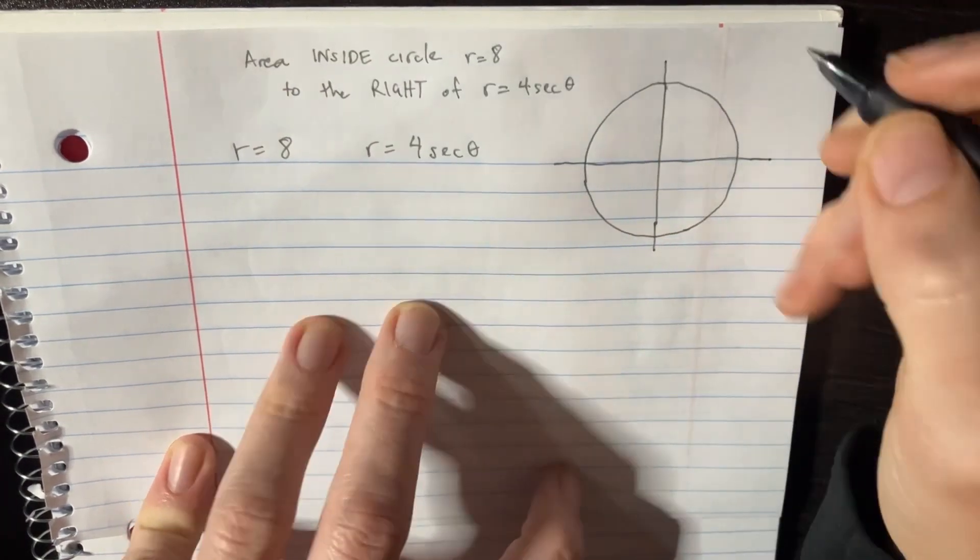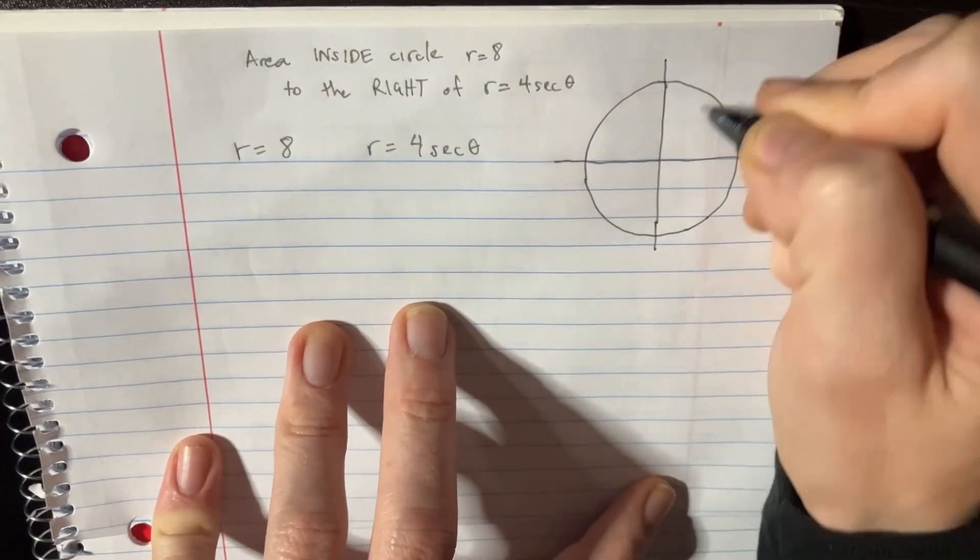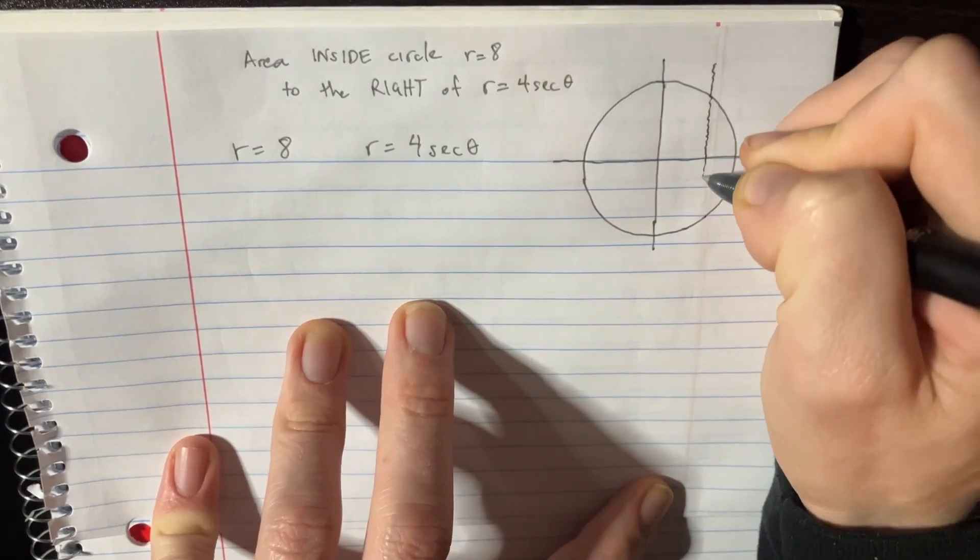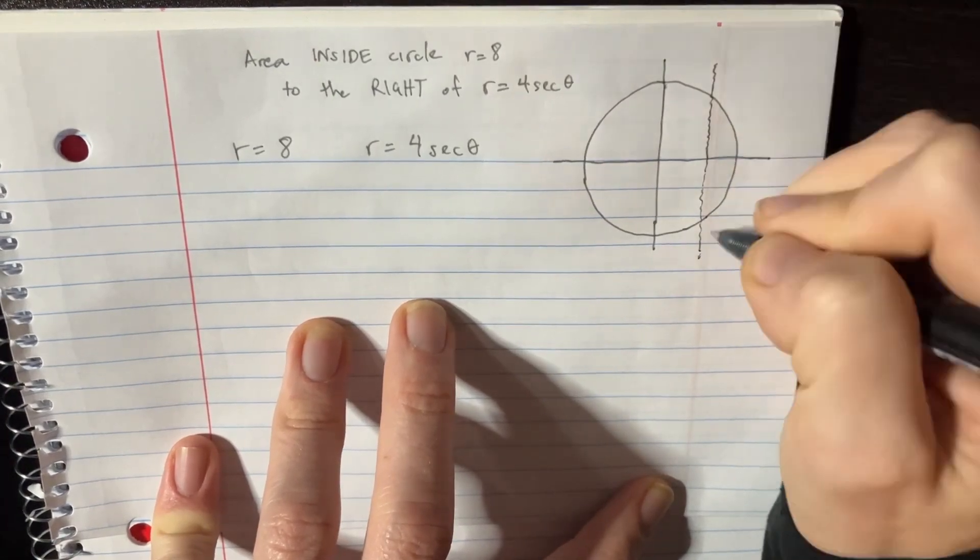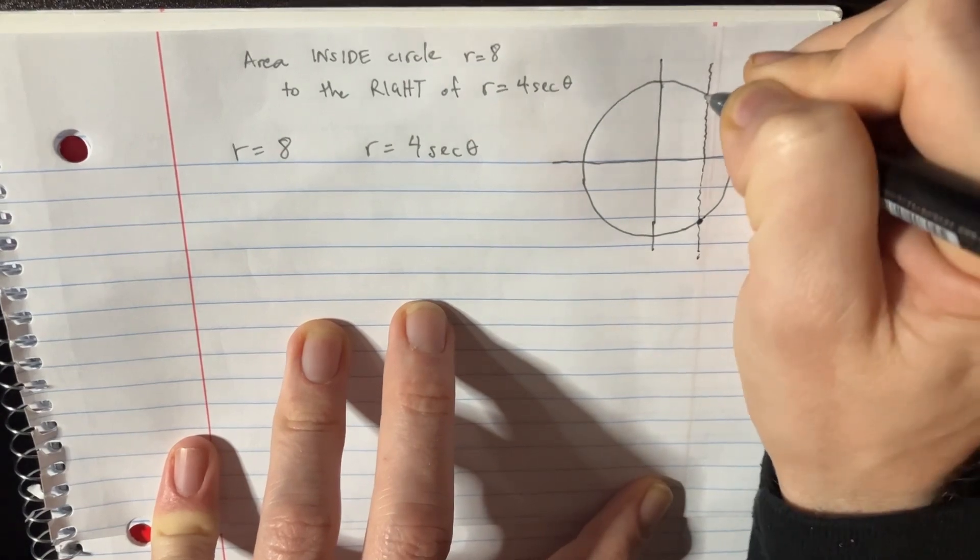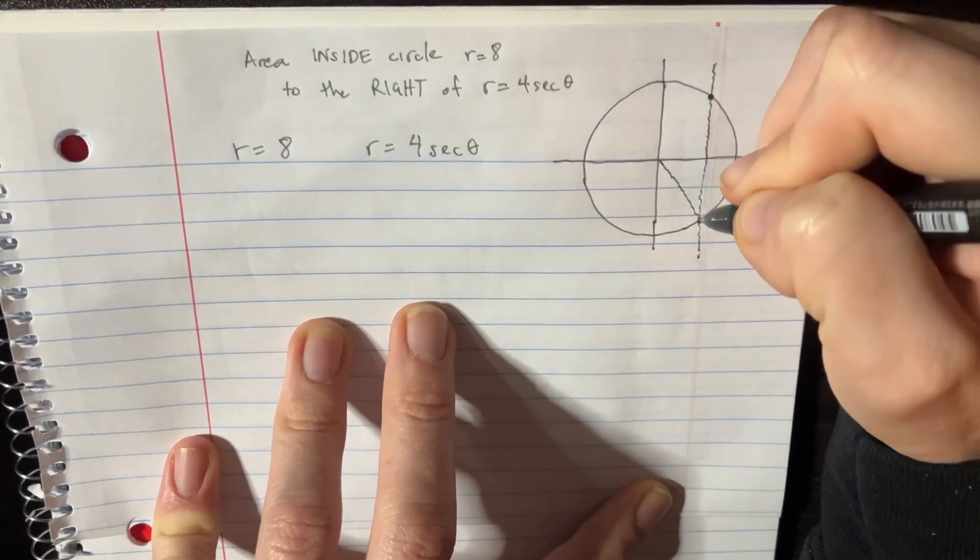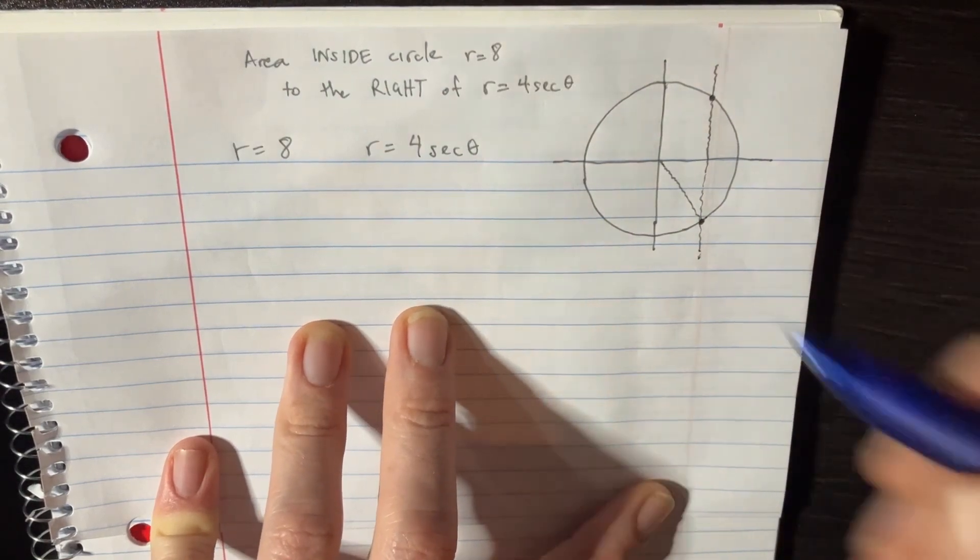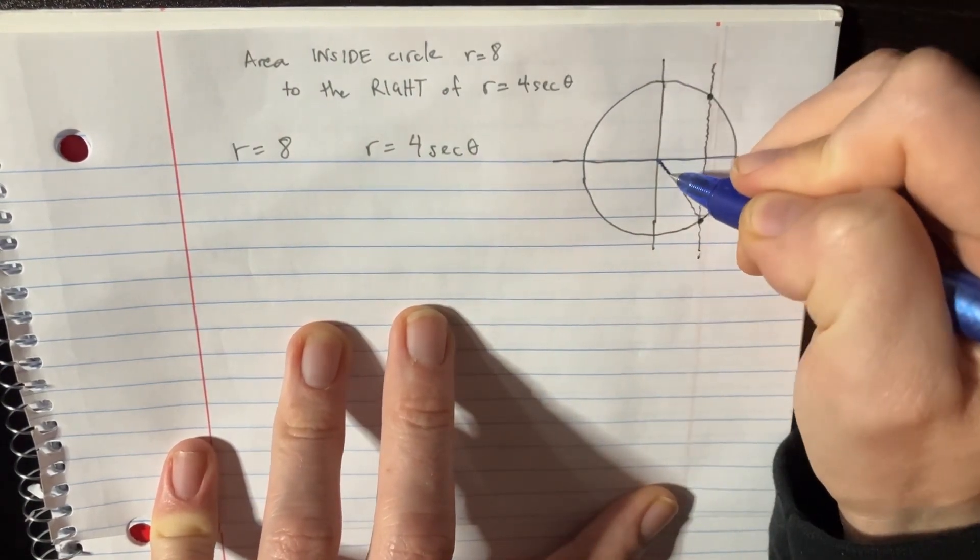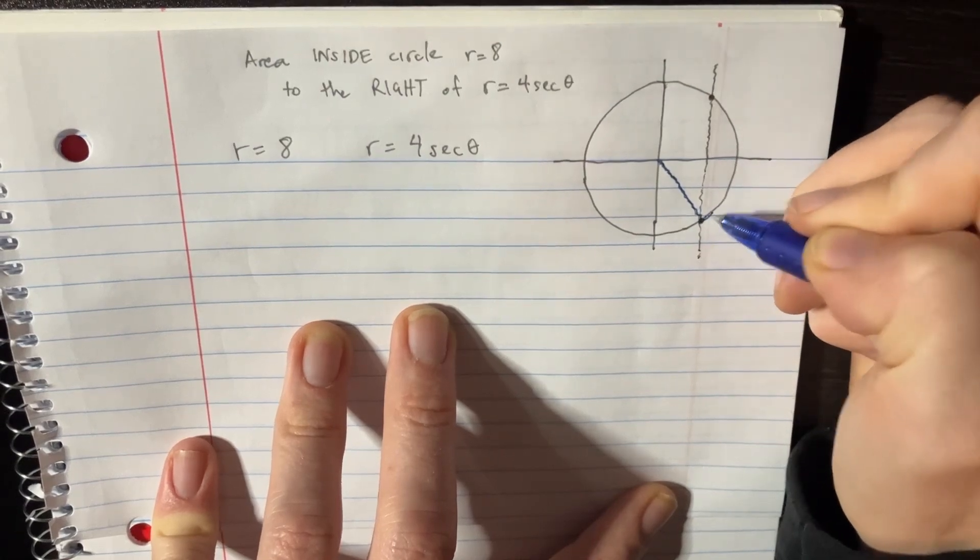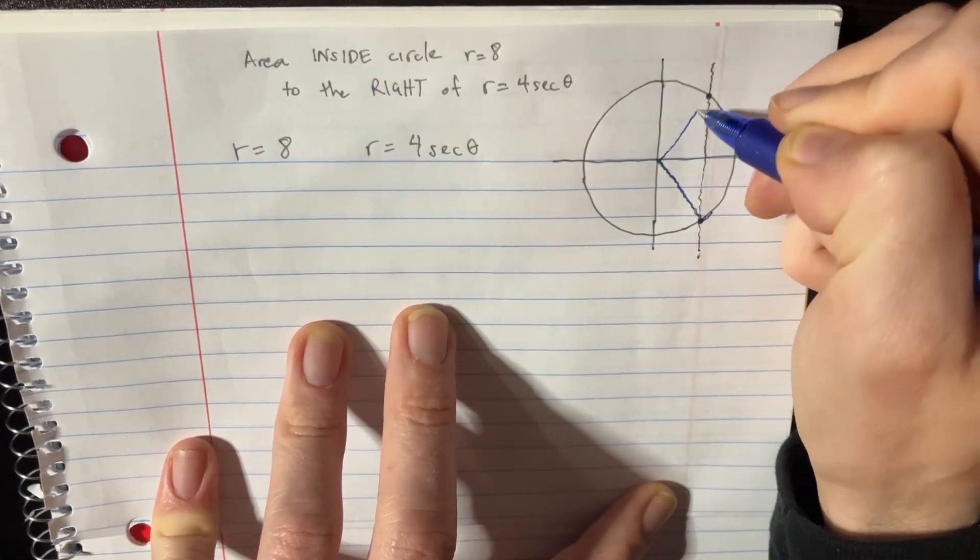And we'll call that a day. So here's the line 4 secant theta and we're going to intersect it right about here and there. So obviously it's intersecting from here. I'll make the thetas blue, so it's intersecting from here and then we're going from here to there.